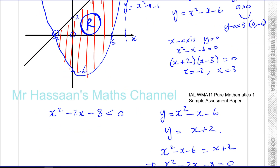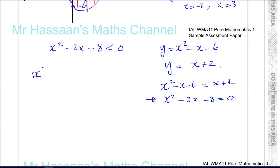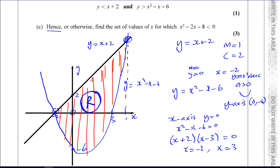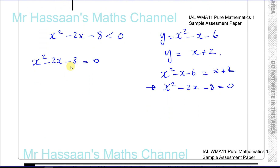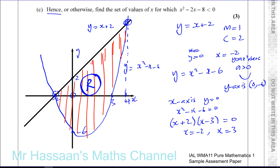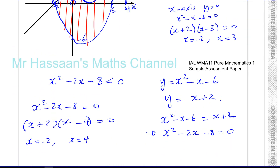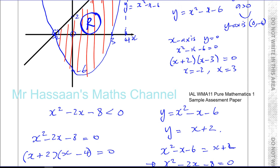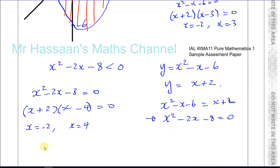Let's solve x squared minus 2x minus 8 equals 0. We can factorize: two numbers 4 and 2, so we get x minus 4 and x plus 2. This gives x squared minus 4x plus 2x minus 8, so x equals minus 2 — which is one of the points we already knew — and x equals 4. So I know this other intersection point is at x equals 4. Therefore x squared minus 2x minus 8 is less than 0 between the values x equals minus 2 and x equals 4.